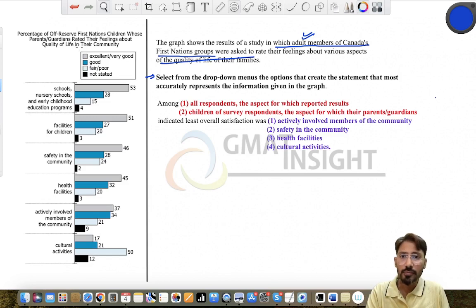The question says percentage of off-reserve First Nations children whose parents or guardians rated their feelings about quality of life in their communities. So the parents or the guardians of those children are expressing their feelings about the quality of life in their community. Now there are these four categories: excellent or very good, good, fair or poor, and the dark is not stated.